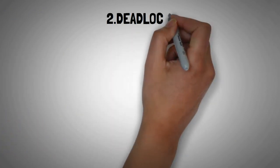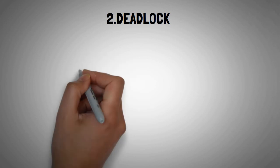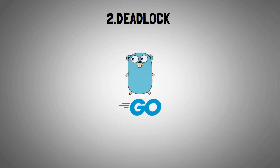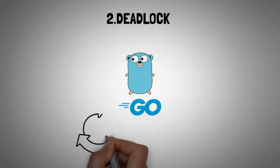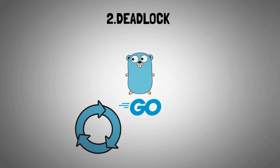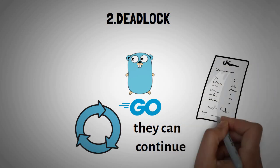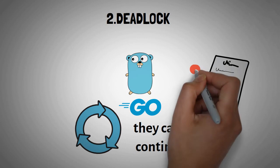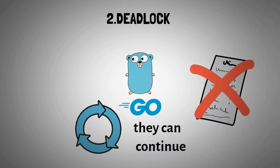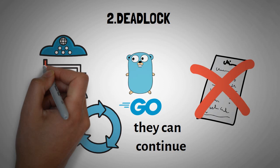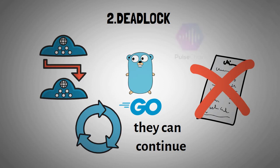The second risk has to do with deadlock. Concurrency is one of the main advantages of Golang, but it also comes with a unique challenge known as deadlock. This is when two or more processes are waiting for each other to finish before they can continue, which can lead to a situation where the system comes to a standstill and no transactions can be processed. This can happen when multiple concurrent processes are trying to access the same resource. The team at PulseChain is aware of this challenge and is working on ways to address it.